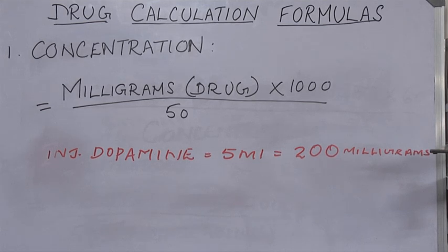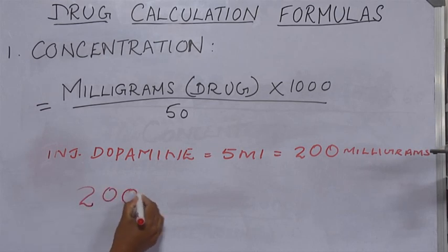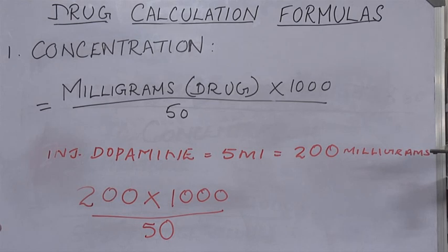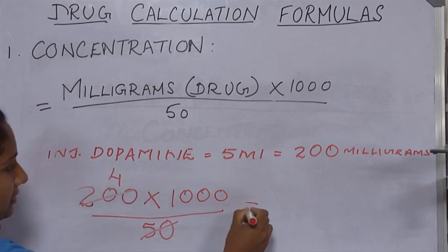Let us calculate this flow rate based upon the doctor's order. To do that, we need to first calculate the concentration. That number can then be used to calculate the ml per hour flow rate. To calculate the concentration, we multiply the number of mg of dopamine by 1000 and divide it by 50, as explained earlier. The 5 ml ampoule of dopamine injection contains 200 mg of the drug. So, we multiply 200 by 1000 and divide the product by 50. Thus, the concentration is 4000.